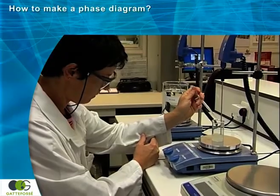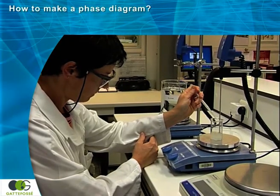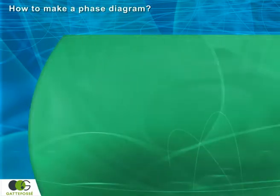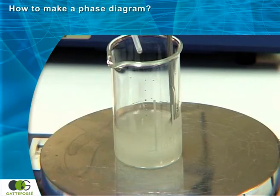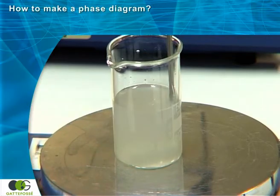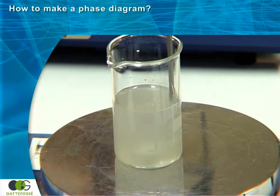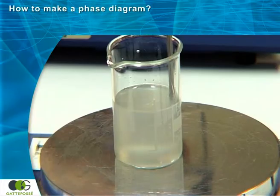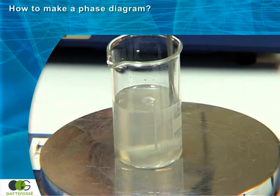The titration is then continued, drop by drop, until the appearance changes again. The formula becomes transparent, which means it has entered a micro-emulsion phase.